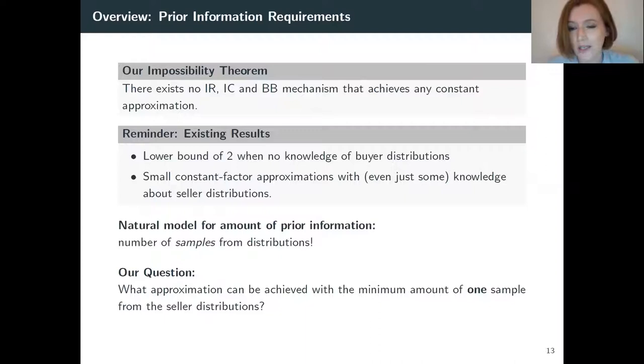As a short overview, we have seen that there is no alpha approximation possible without prior information. With priors on only one side, you can't do better than two. However, partial information on one side is already enough to get small constant factors. For the future, we will measure the amount of information we have about the distribution with the model of sample access. So we assume not to know DB or DS, but we assume to know a number of samples from them, which we fix. This is widely used in literature and also a very natural model in practice.